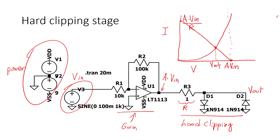By changing the value of this resistor, we can change the amount of clipping that occurs. You can also put resistors in parallel with the diodes, or in series with the diodes — all of these things can be played around with to create different types of clipping effects.